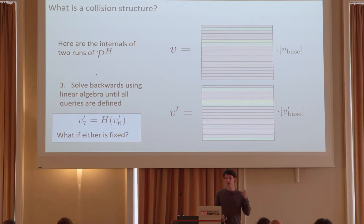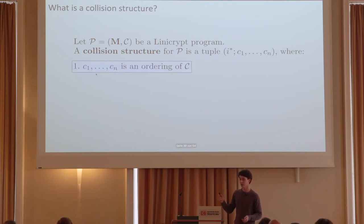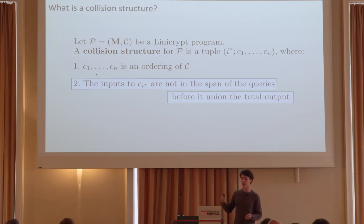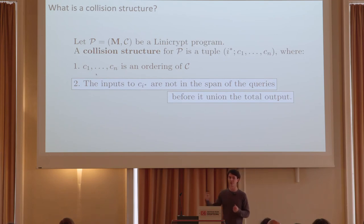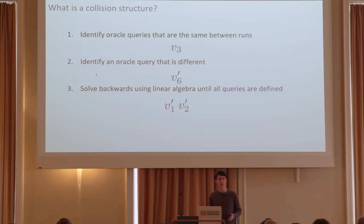What might go wrong? If we expect v7 or v6 to not be fixed but they are, we need an ordering to get around this. This is where the special recipe comes in. A collision structure is an ordering of C — the ordering of the program's queries — and a special query i. The inputs to the special query i cannot be in the span of the queries before it or inside the total output; otherwise it would already be marked the same in both runs. We also impose a constraint on the collision structure to ensure we don't get stuck at any point.